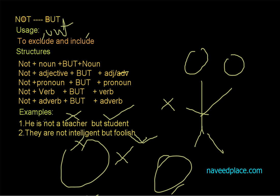We have two examples. The first example is: he is not. Here we have noun teacher but noun student. Second example is adjective: intelligent is adjective, and foolish is adjective. Get it?